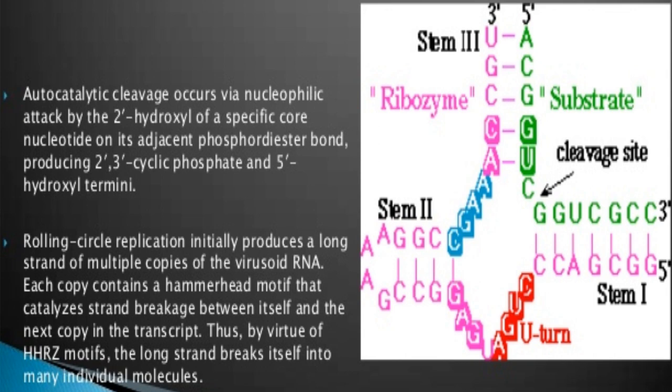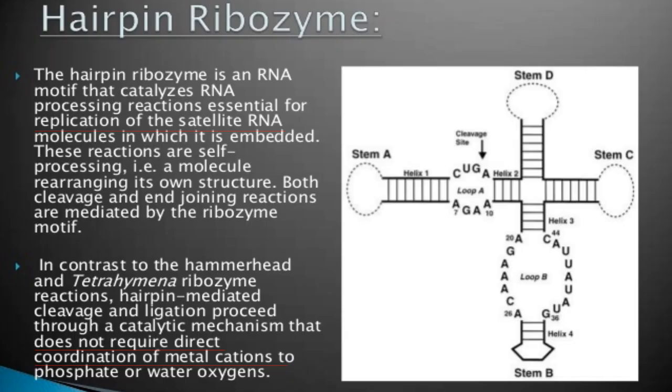Rolling circle replication initially produces a long strand of multiple copies of virusoid RNA. Each copy contains a hammerhead motif that catalyzes strand breakage between itself and the next copy in the transcript. Thus, by virtue of the hammerhead ribozyme motif, the long strand breaks itself into many individual molecules.